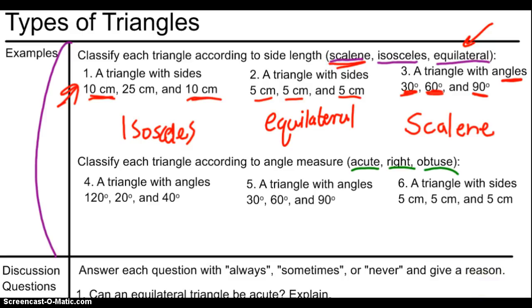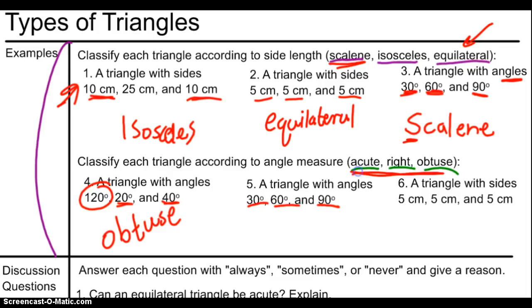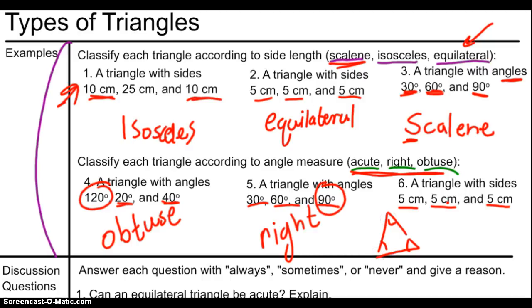For number 4, we've got two acute angles but one obtuse angle, so this is an obtuse triangle. A triangle with angles 30, 60, and 90 — classifying by angles now — this is a right triangle since there's a 90-degree angle. The last one, a triangle with sides 5, 5, and 5: that's an equilateral triangle, and an equilateral triangle is also equiangular. There are 180 degrees total, so 180 divided by 3 means each angle is 60 degrees — that makes it an acute triangle. In this video we've learned how to classify triangles based on sides and angles, and the relationship between different sides and angles of triangles. I'll see you next time — make sure to bring your notes!